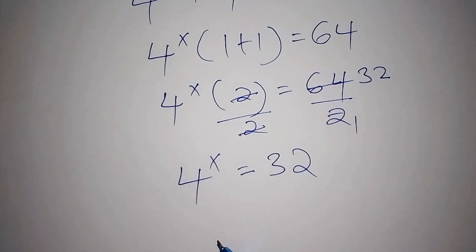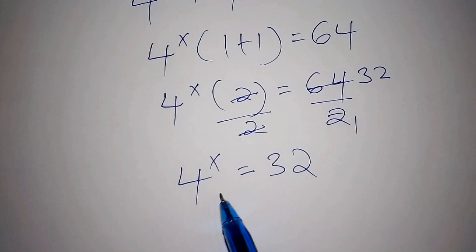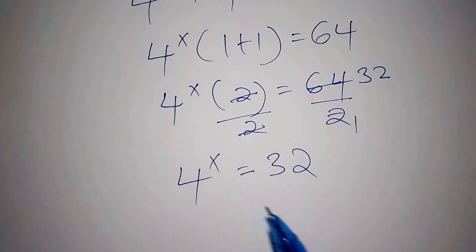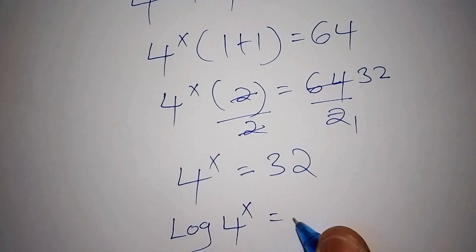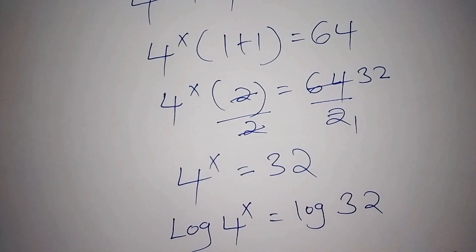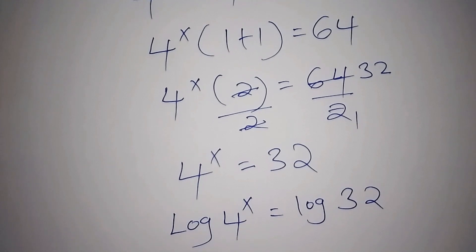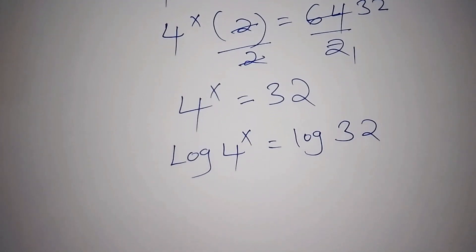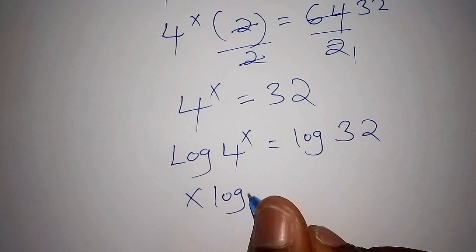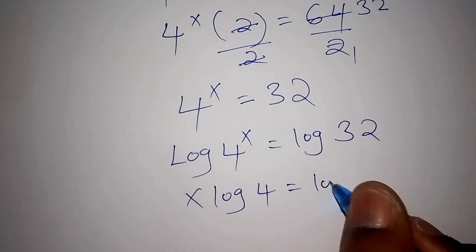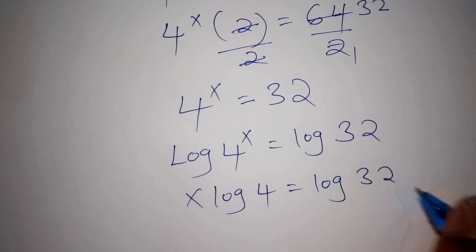We cannot express 32 to the base of 4, so we shall now use the log. We shall have the log of 4 to the power of x is equals to the log of 32. The log of 4 to the power of x can also be written as x log 4, so x log 4 is equals to the log of 32.